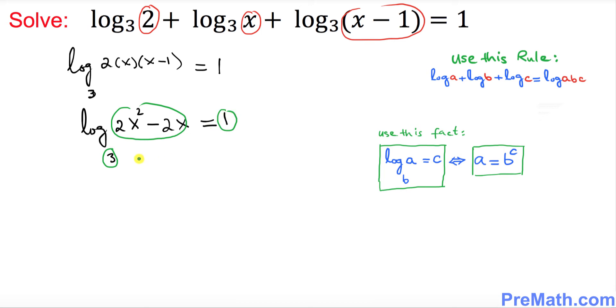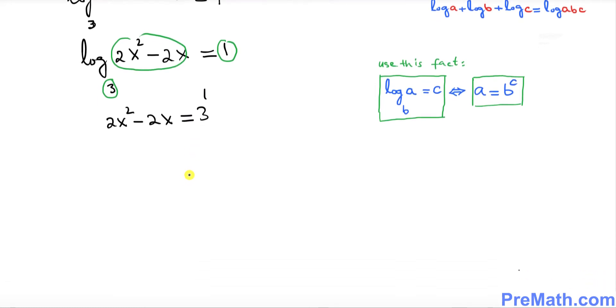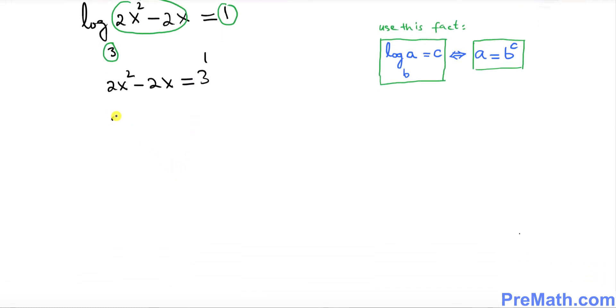If you want to convert from logarithmic equation to exponential one, in this case our base is 3, b is our a, and this right hand side is our c. Let's convert it, so this could be written as 2x² - 2x = 3¹.